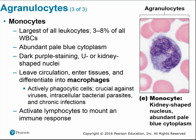Monocytes are the largest of all leukocytes and have a kidney- or U-shaped nucleus. They can leave circulation, enter tissue spaces, and become macrophages — large eating cells that are actively phagocytic, engulfing viruses, bacterial parasites, and infected cells. They also help activate lymphocytes to mount a coordinated immune response.